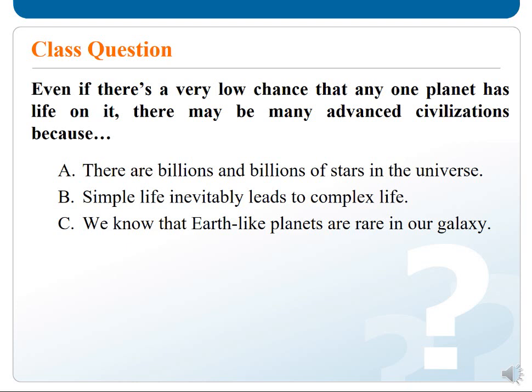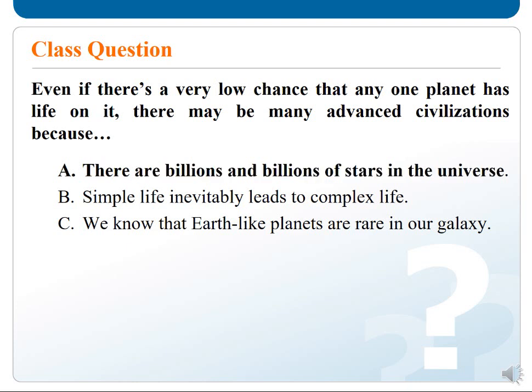Class question: Even if there is a very low chance that any one planet has life on it, there may be many advanced civilizations because — Choice A: There are billions and billions of stars in the universe. Choice B: Simple life inevitably leads to complex life. Choice C: We know that Earth-like planets are rare in our galaxy. The answer is A — there are billions of stars in the universe, which is why we have a chance that one of the planets may have life on it.